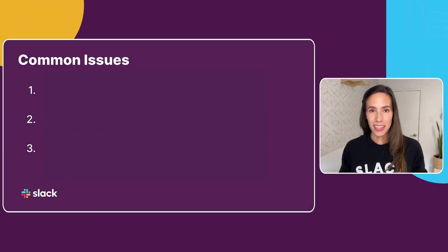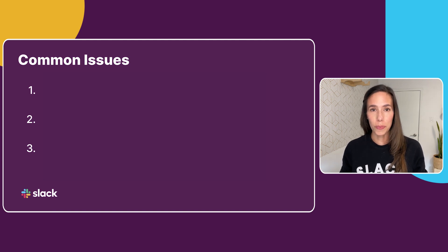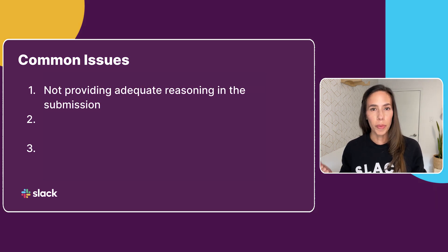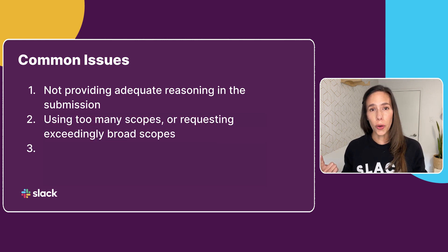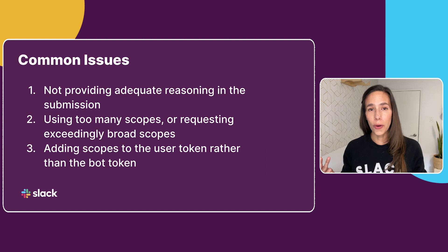During the app review process, there are three common mistakes that we see when developers request scopes: not providing adequate reasoning for the scopes you're requesting; requesting too many scopes or scopes that are too broad for your app's functionality; and third, assigning scopes to your user token instead of your bot token.